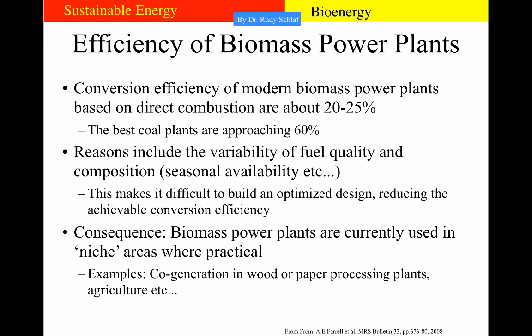Biomass power plants are less efficient than fossil fuel-based plants. The reason is the variability of fuel quality and composition — depending on the season and moisture content, the fuel behaves differently, making it difficult to optimize plant design. Modern biomass power plants based on direct combustion achieve only about 20–25% conversion efficiency, compared to coal plants approaching 60% for very modern designs. Consequently, biomass power plants are usually used in niche areas where the fuel is available for free, such as municipal waste incineration, cogeneration in wood or paper processing plants, and agriculture. It does not seem to make much sense to grow biomass specifically for such power plants.